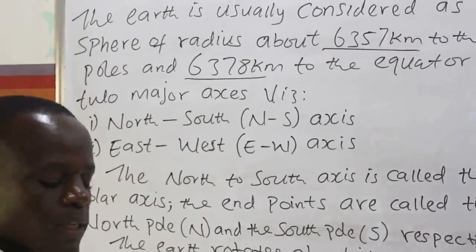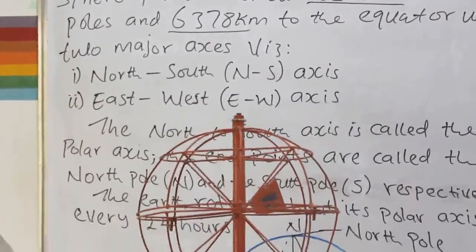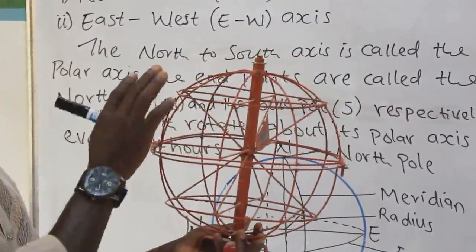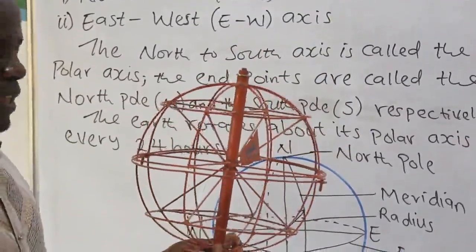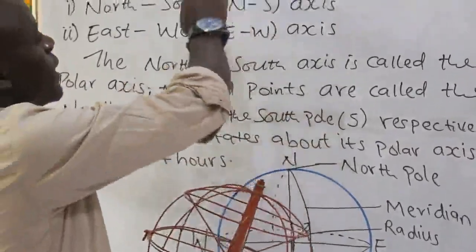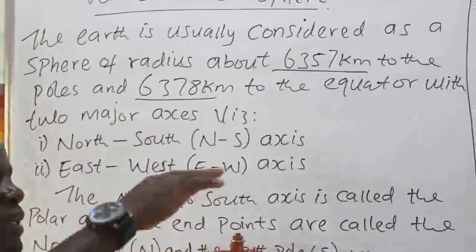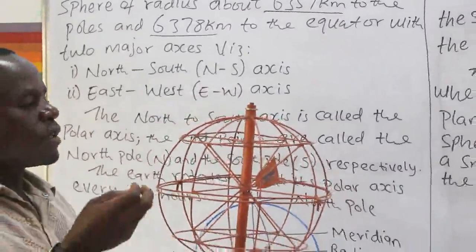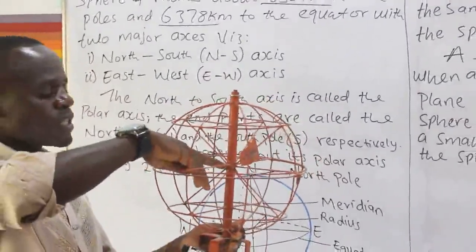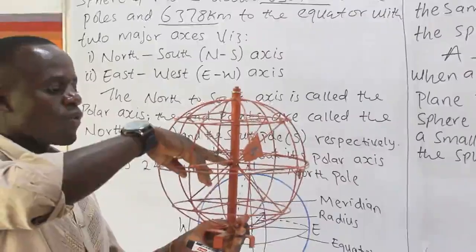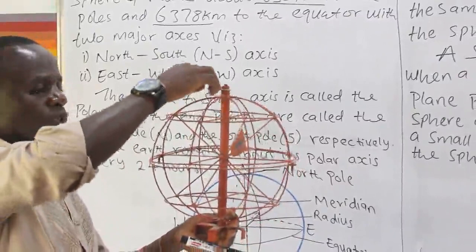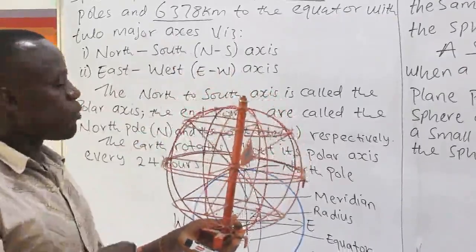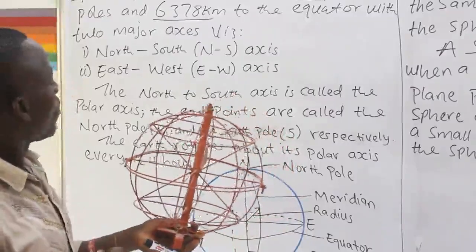This is a globe, which is spherical in shape. All the lines here are what we shall explain in the course of this lesson. When I said the earth has a radius to the equator and to the poles — the top here is the north pole and the bottom is the south pole. The radius of the earth to the north pole is from the center of the earth, and from the center up to the north pole is the radius to the poles.